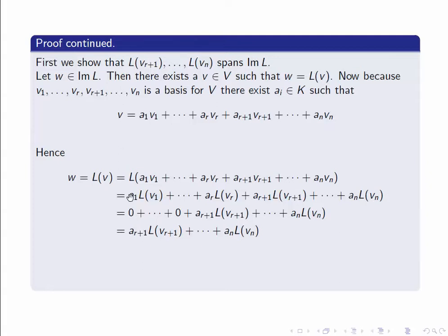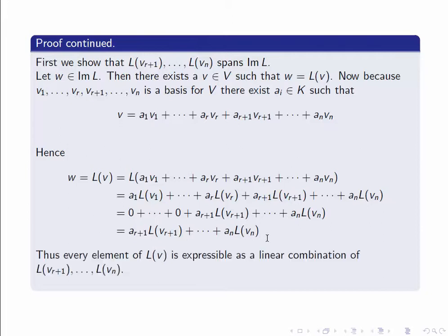Now let's look at the first terms. V1 up to Vr are in the kernel, so L(V1), L(V2), ..., L(Vr) are all zero. We can replace these first terms by zeros, and rewriting that we get W = Ar+1·L(Vr+1) + ... + AN·L(VN). So we've shown that any element of the image is expressible as a linear combination of these elements — which is exactly the statement that these elements span the image of L. That completes the first part of the proof.